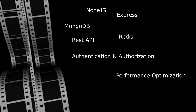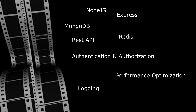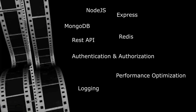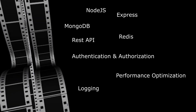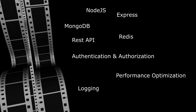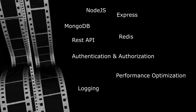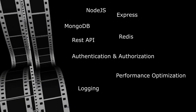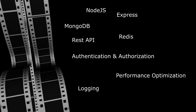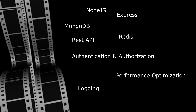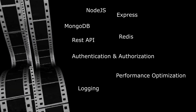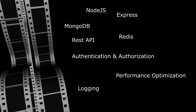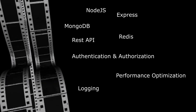One more important thing is logging. When we are doing local development, we can always add console.log and see what is happening. But we don't have that privilege when the code is deployed in production. For that, we will build a robust logging framework that will help us see what is happening in the code, where things are breaking, and it will help us in debugging.